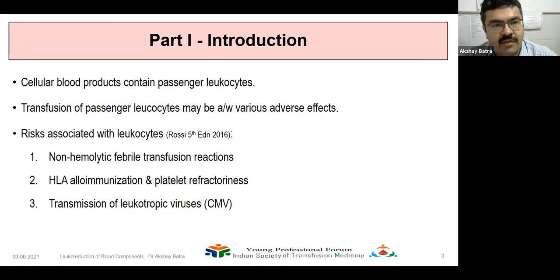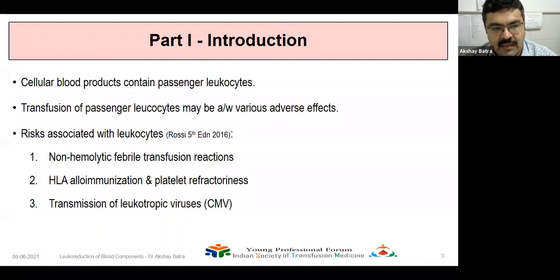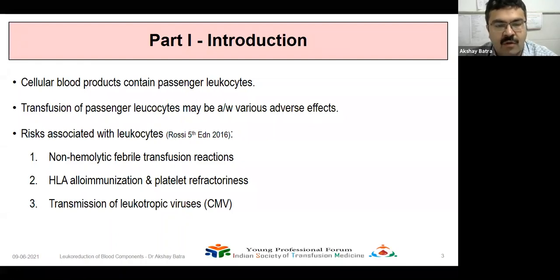Considering Part One — Introduction. The cellular blood products contain passenger leukocytes. Transfusion of passenger leukocytes may be associated with various adverse effects. As per Rossi, complications associated with leukocytes are majorly classified into three: the non-hemolytic febrile transfusion reactions, HLA alloimmunization and platelet refractoriness, and transmission of leukotropic viruses such as CMV.